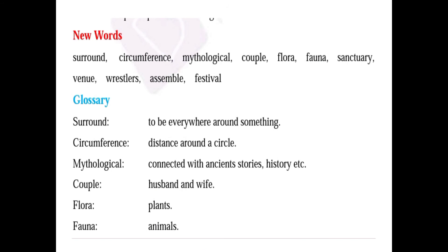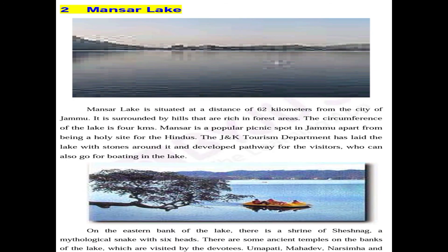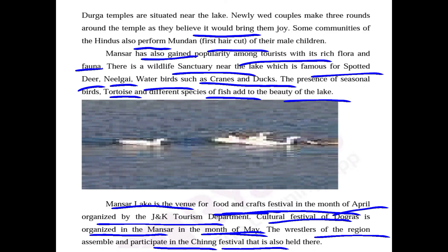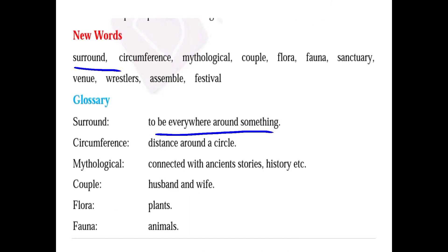During this lesson we read some new words. Let us try to understand what those words mean. The first word is 'surround' — surround means to be everywhere around something. For example, in the lesson, hills are all around Mansar Lake, so Mansar Lake is surrounded by the chain of hills. 'Circumference' means the distance around a circle — the total distance measured around the boundary of the lake.